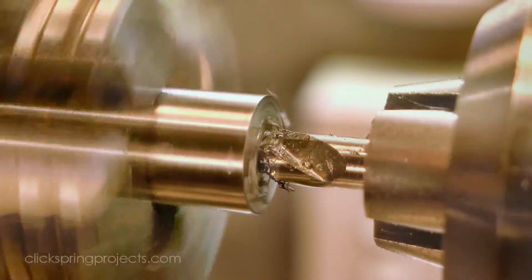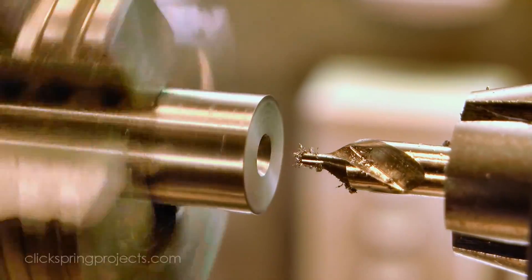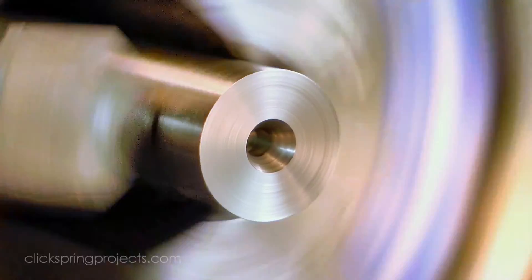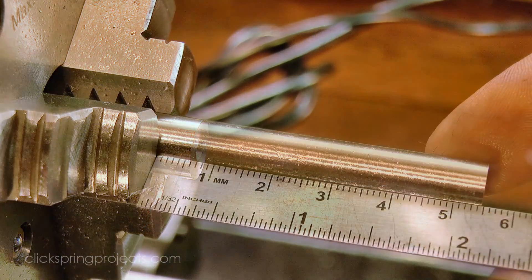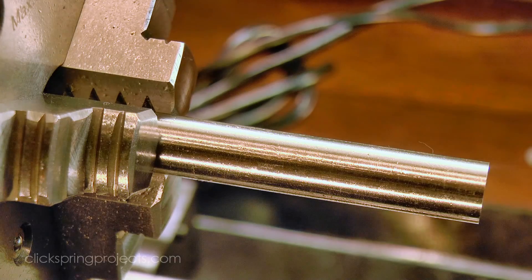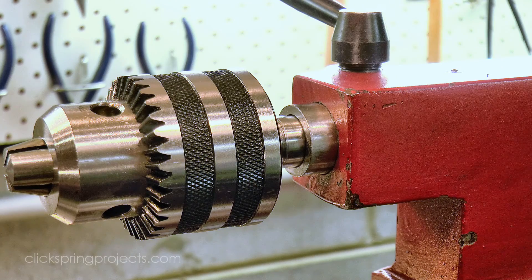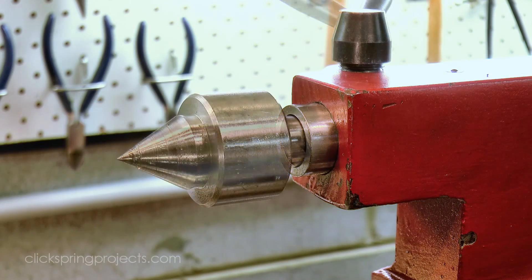Now there will be quite a bit of side force on the work as this thread is cut, and it's going to be sticking out a long way from the chuck, so tailstock support will be essential. A number 3 center drill was used to cut the center hole, and this live center will provide the support.